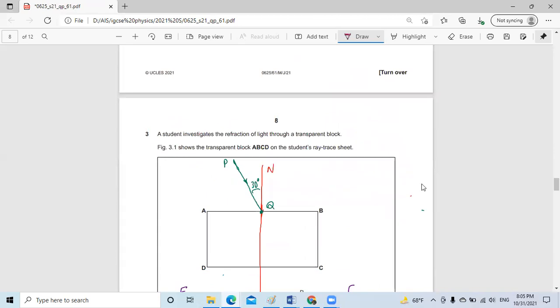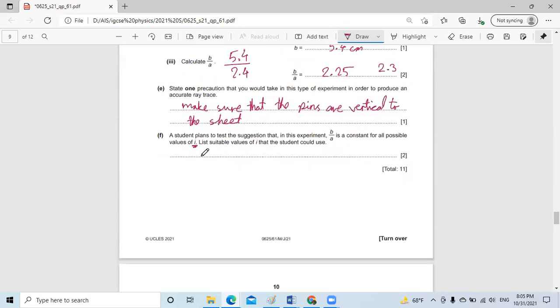So let's say that I would put, for example, 40 degrees, 45 degrees, 50 degrees, 60 degrees, and maybe 65 degrees. That's enough. And that's it. Have a nice day.